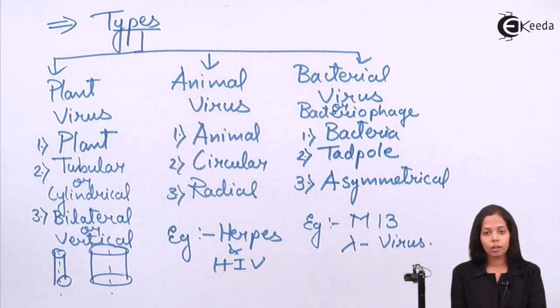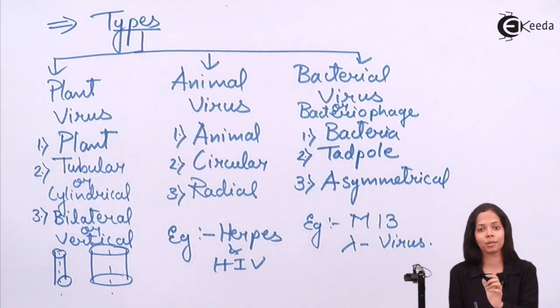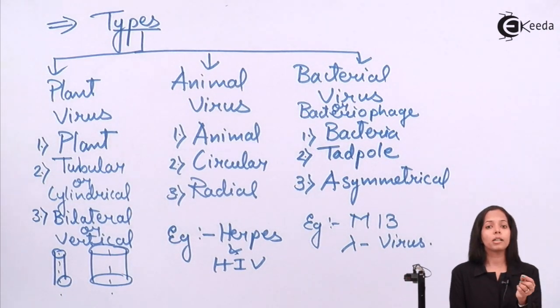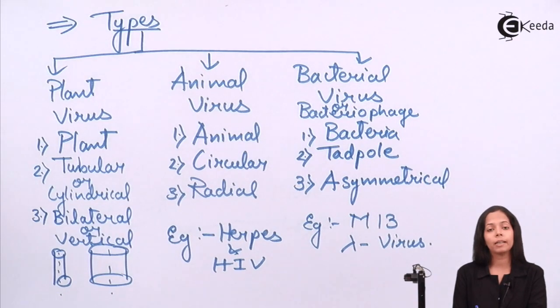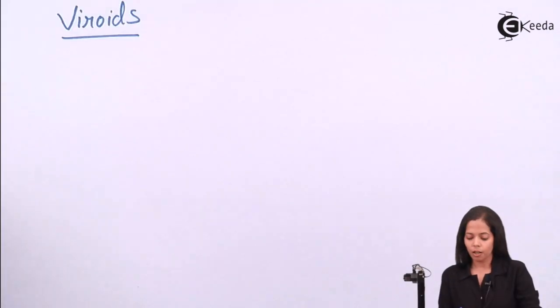Here we completed with topic virus. Now we are going to study what is viroid. That is the next part of this topic. But before that student, we need to know economic importance of virus. Is there any economic importance of virus? No, mostly they cause disease. But in a very important procedure viruses are used and that procedure is called as gene therapy. When we have to insert some gene inside human body, viruses are used. You will study this thing in detail in twelfth standard.